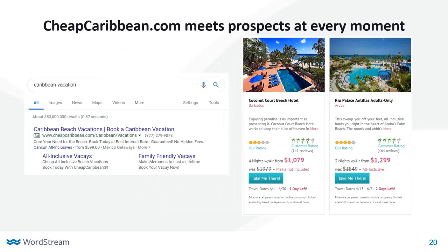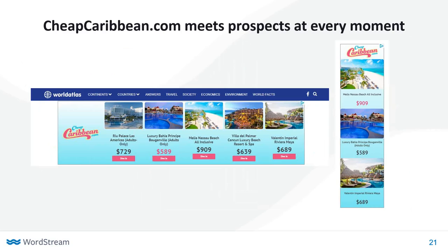All the while, CheapCaribbean.com recognizes that between these Google searches, prospective travelers are reading travel blogs. They serve super enticing, contextually relevant display ads while the prospect is consuming that content — not only is it enticing, but it's keeping their brand top of mind. So if the prospect goes back and does another Google search, their brand is on top of her mind, making her more likely to click. Through the information from those helpful landing pages, she decides Punta Cana in the Dominican Republic looks like a great destination and wants to learn more.